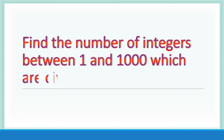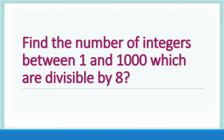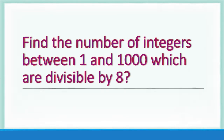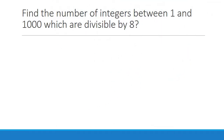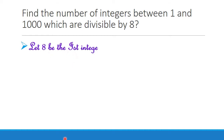Find the number of integers between 1 and 1000 which are divisible by 8. Here we have to find the number of integers between 1 and 1000 which are divisible by 8. For that, at first we have to consider the first integer between 1 and 1000 which is divisible by 8. We can see that it is 8 itself. Let A be the first integer between 1 and 1000 which is divisible by 8.